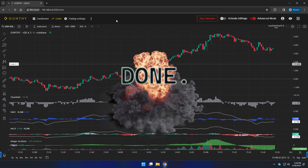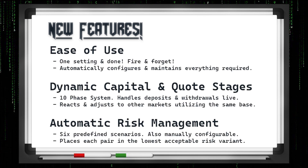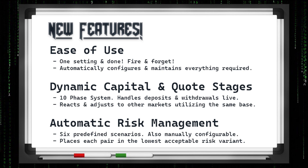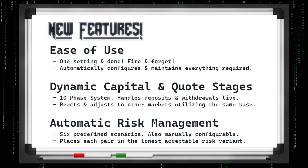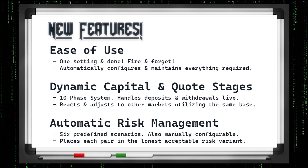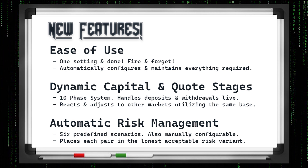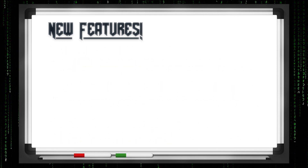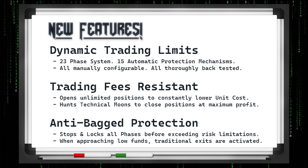Back to the new features. You just saw how easy it was with the one setting. We also expanded the capital stage system to be a 10-phase system — it still handles deposits and withdrawals live and reacts to other pairs using the same base even if they're not using MG. We built in 6 predefined risk management scenarios to determine how much you should be spending at any given time. We expanded the dynamic trading limit system to a 23-phase system with 15 automatic protection mechanisms.